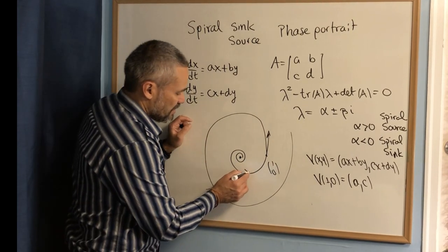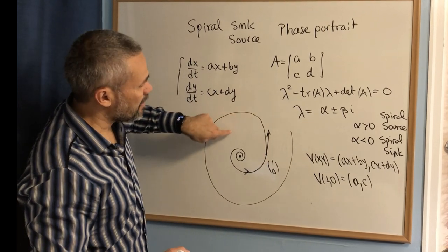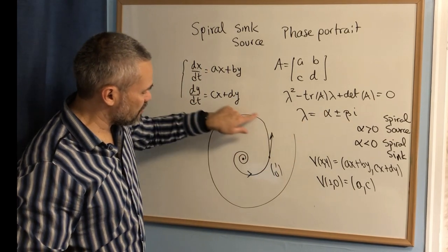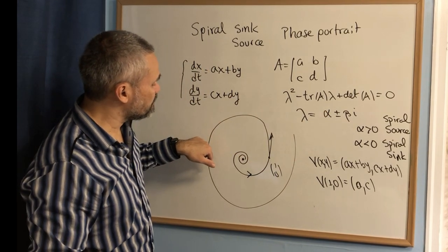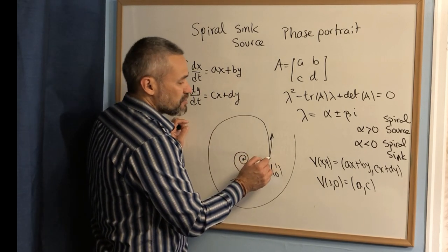With this direction, that means that in this case, for example, it would be a source, right? Alpha is bigger than zero, and the direction would be counterclockwise. And that's given because of this vector.